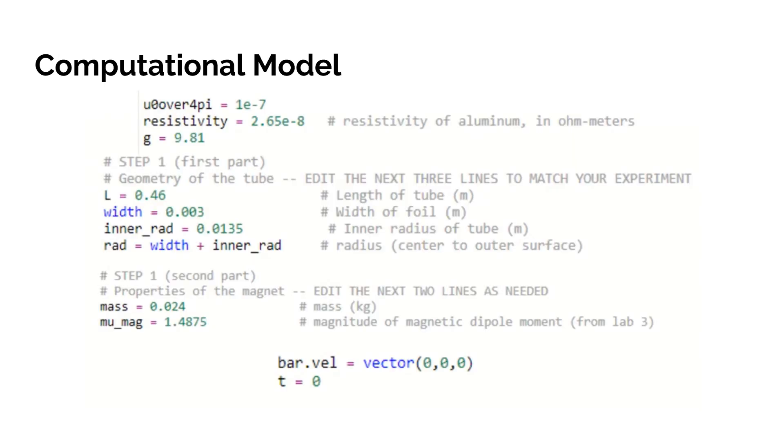Here's the initial conditions section of our computational model. This includes the information from our observational data as well as information about the tube's dimensions. Our initial velocity of the magnet is going to be 0 because it's at rest.